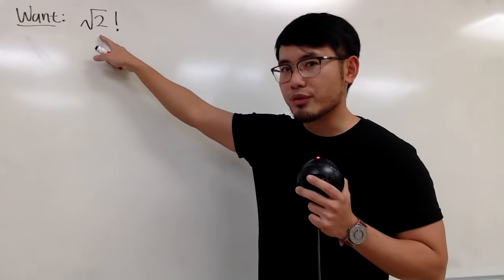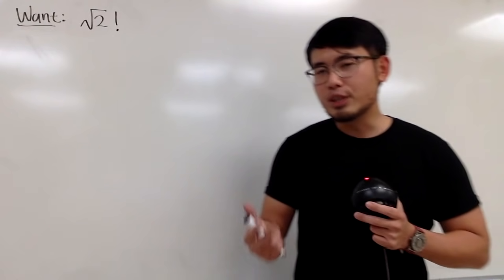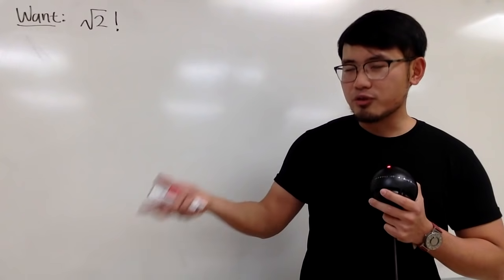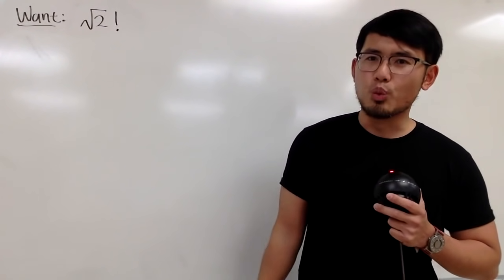Today, we are going to do square root of 2 factorial. And of course, the usual definition, n times n minus 1 times dot dot dot times 2 times 1, that's only good for positive numbers, so that's not going to work for us.